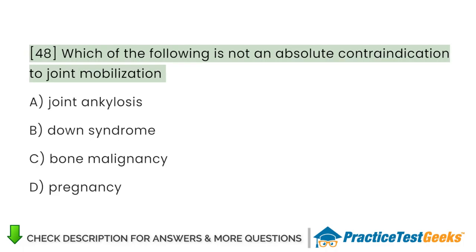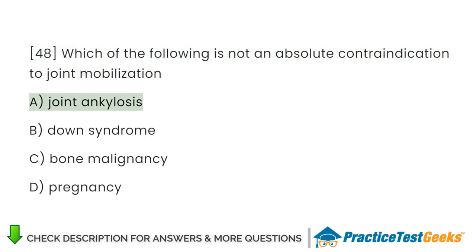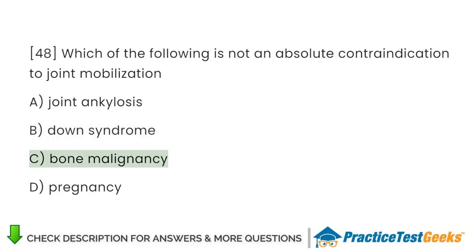Which of the following is not an absolute contraindication to joint mobilization? A. Joint ankylosis. B. Down syndrome. C. Bone malignancy. D. Pregnancy.